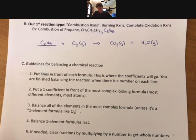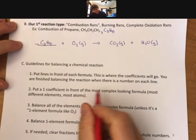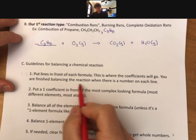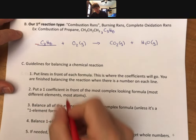Now let's go through our guidelines for balancing a chemical reaction. The first thing you do is you put lines in front of each formula and I'm going to do that in red. This is where the coefficients will go. You are finished balancing the reaction when there is a number on each line.